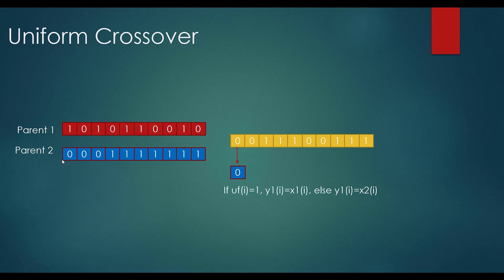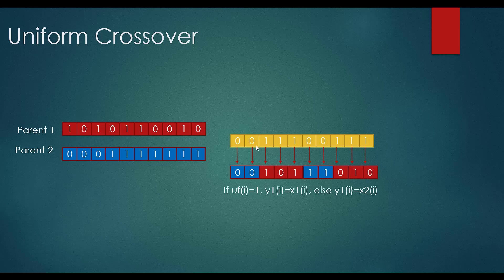So for y1: when UF[i] is zero we take the value from parent two, and when it is one we take from parent one. This happens for all variables of offspring one. For y2, the rule is reversed: if UF[i] equals zero we go to parent one, and if it equals one we go to parent two.